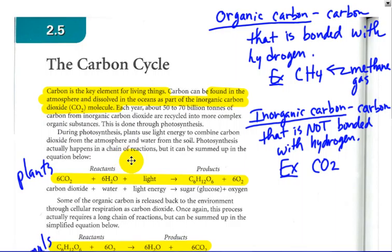During photosynthesis, plants use energy in terms of light to combine carbon dioxide from the atmosphere and water from the soil. Photosynthesis actually happens in chain reactions, but we can summarize it like this. Plants take carbon dioxide and water and light energy, ultraviolet radiation, and from that make oxygen and produce sugars or glucose.